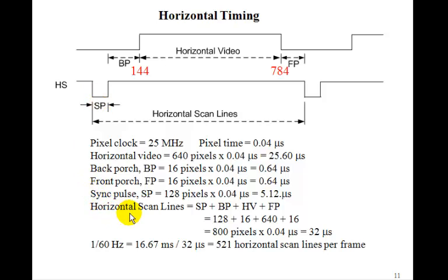So if you add these together, you'll have the time for the horizontal sync pulse, plus the back porch, plus this video horizontal display, plus the front porch. If you add them all up, you get 800 pixels times 0.04, or exactly 32 microseconds. So each horizontal line will take 32 microseconds to scan across. Now at a sixtieth of a second, that's 16.67 milliseconds. If you divide by the 32 microseconds, you see we have a maximum of 521 horizontal scan lines.